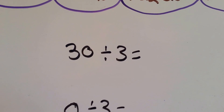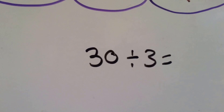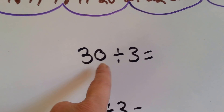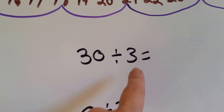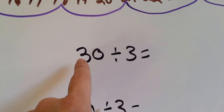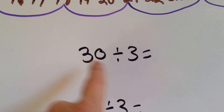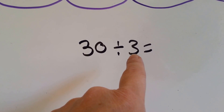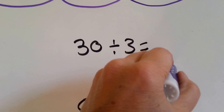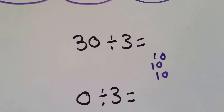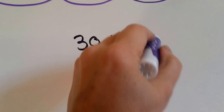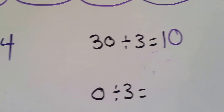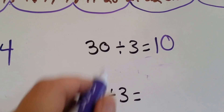How many times can 3 fit into 30? Do you remember when we were dividing by 10's, the trick I taught you? If there's a 0 in the number — like 30 or 40 or 50 or 60 — 3 goes into 30 ten times. If you have a 10 and a 10 and a 10, that makes 30. You've got 10 in each group. 10, 20, 30 — that's 3 times.